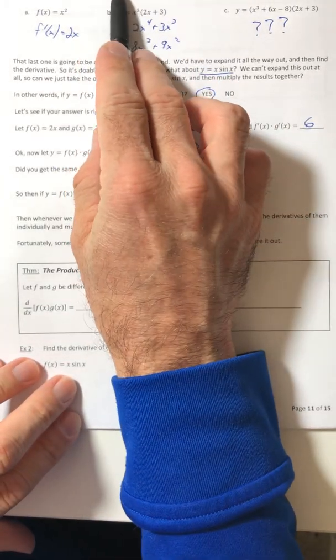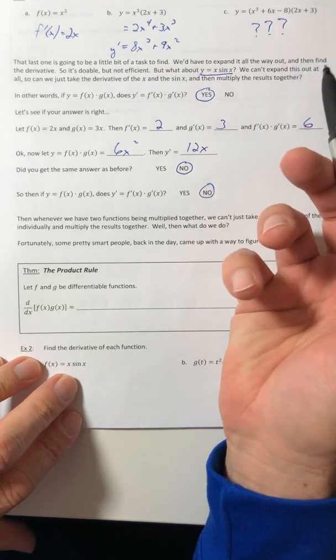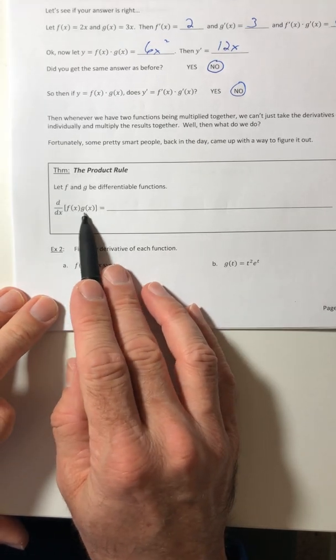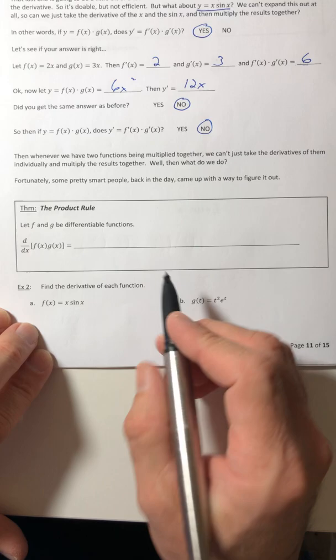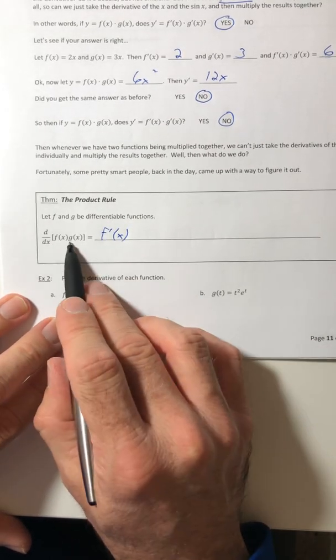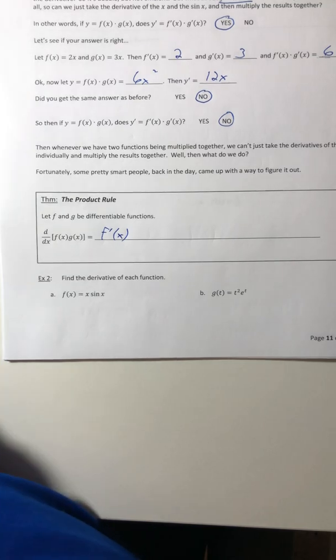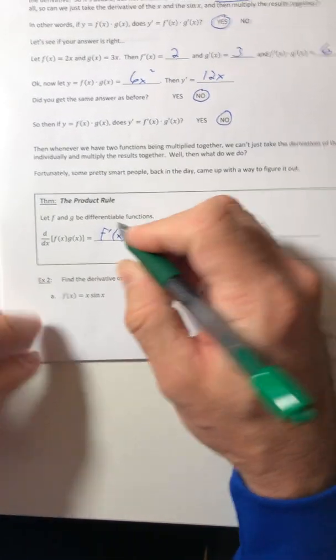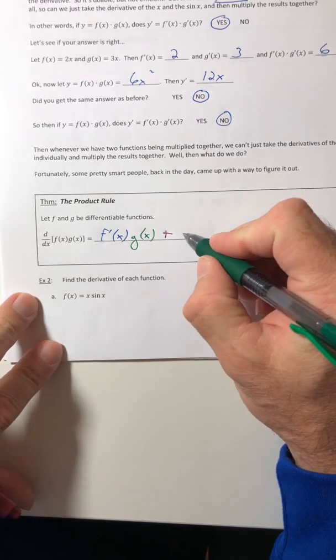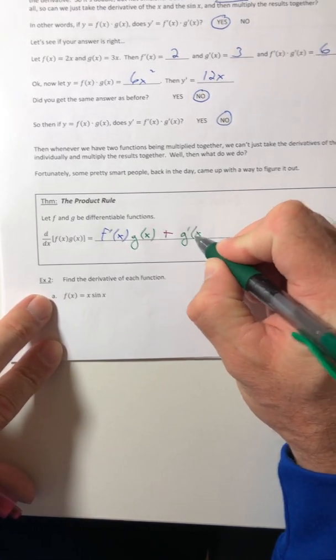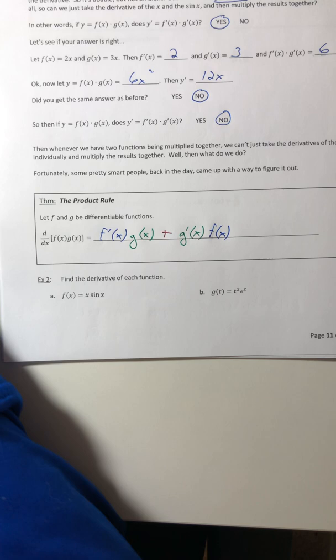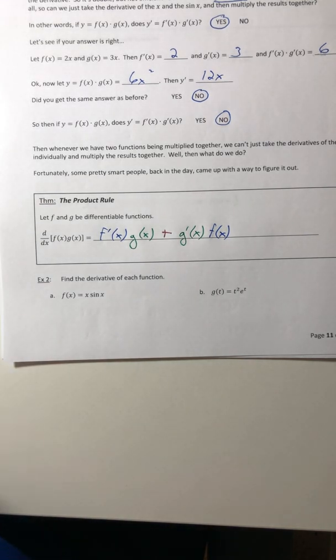So fortunately for us, some pretty smart people figured out what to do with it. So that's why they have a product rule. So there's a rule to follow when you have a product. All right. So let f and g be differentiable functions. So you got a product of some functions together. So the product rule is going to go as follows. It's the derivative of f, the derivative of the first times g. And then plus, now it's going to flip flop. It's going to be the derivative of g or the second piece times the first. And that's how they're all going to go.